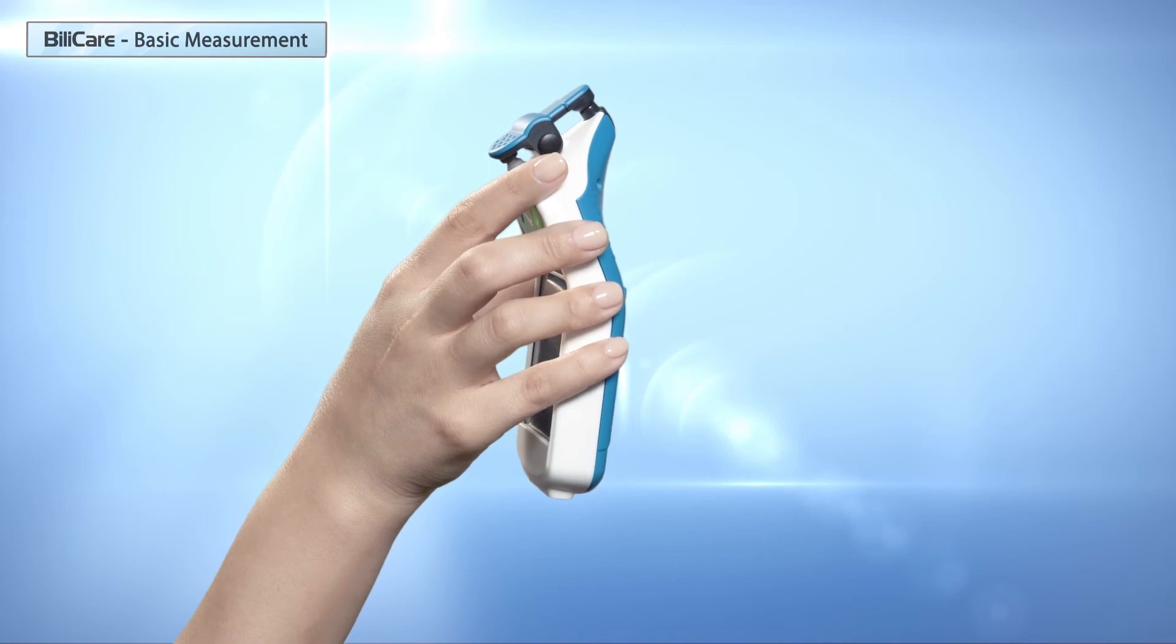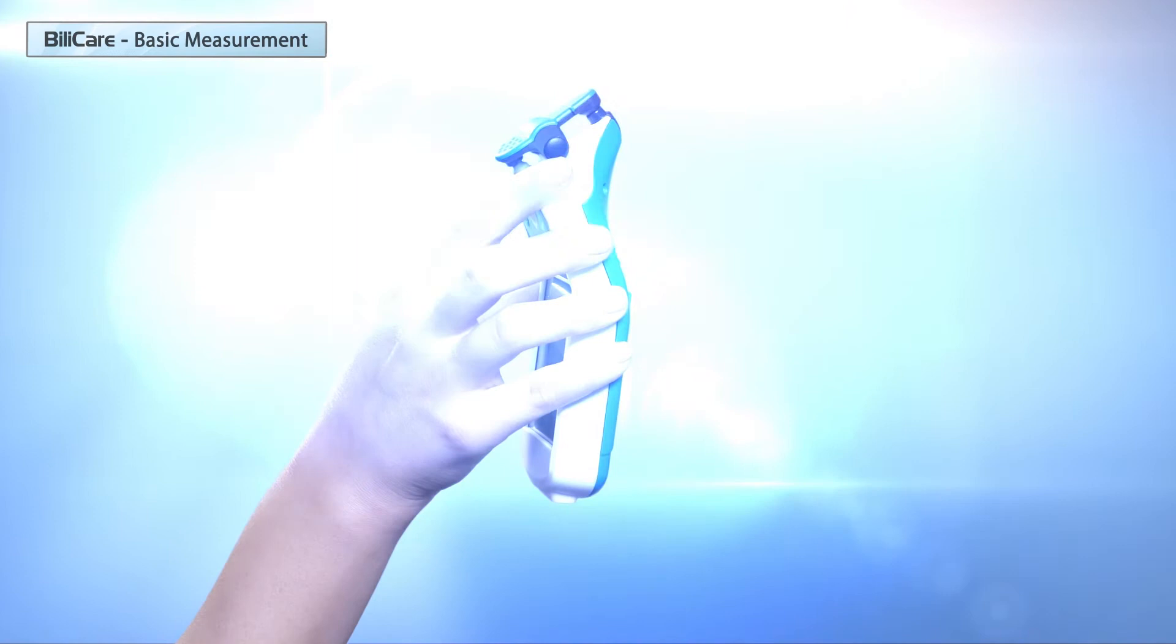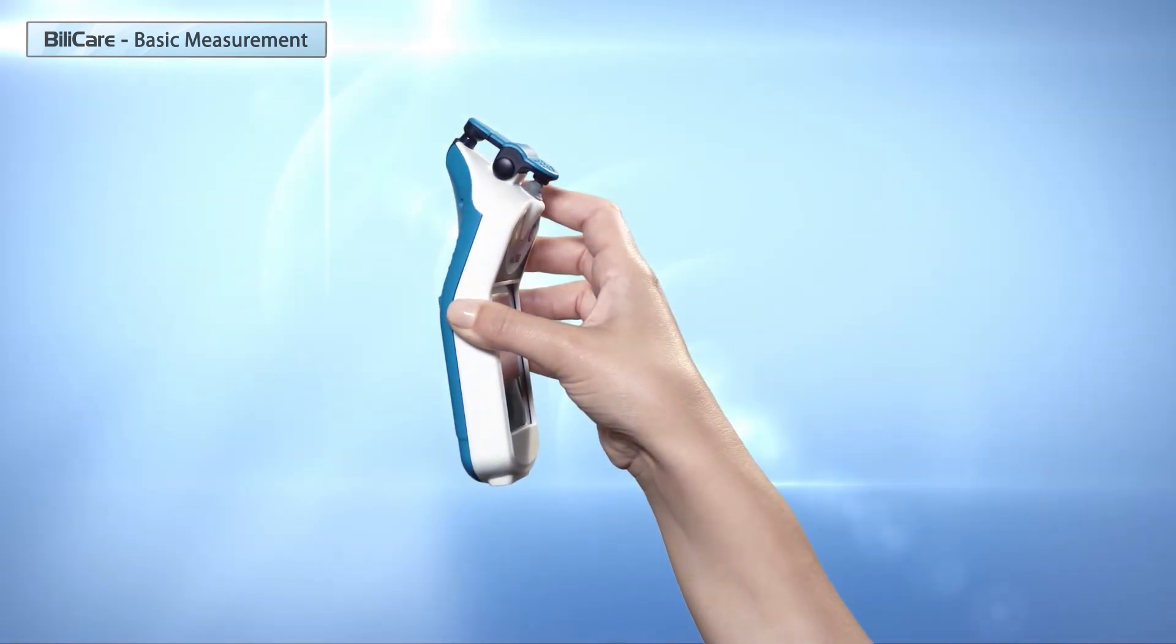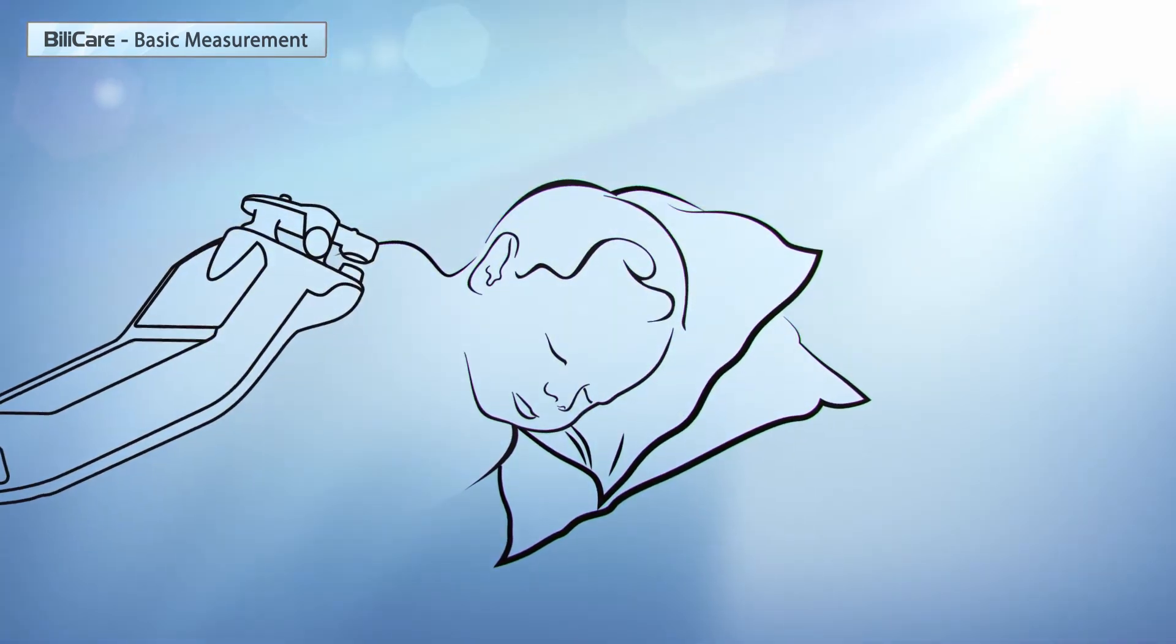During the measurement process, hold BILICARE with your middle, ring and pinky fingers on one side and your thumb on the other side. Your index finger will be used for pressing the clip's lever. You may use your other hand to hold the baby's ear.